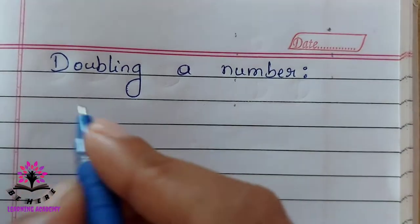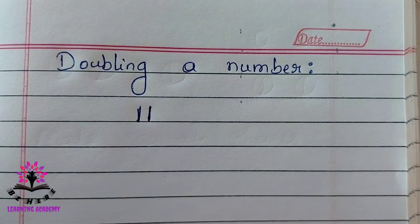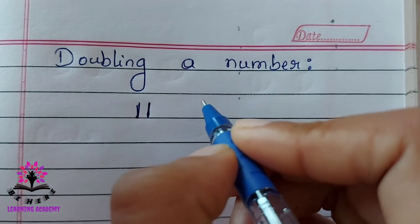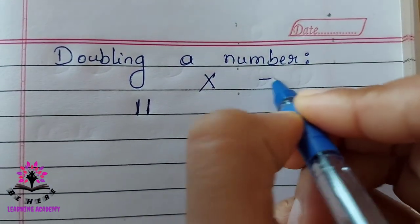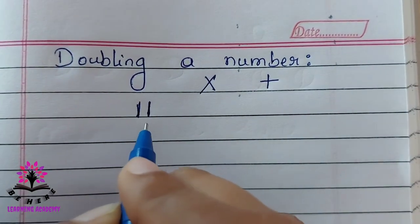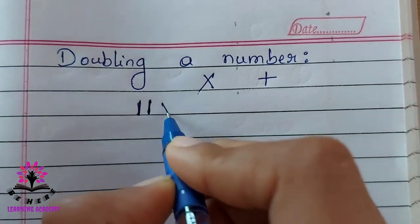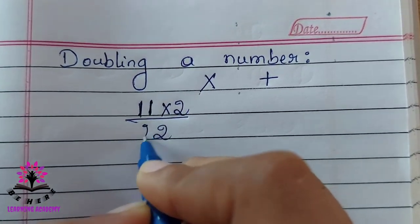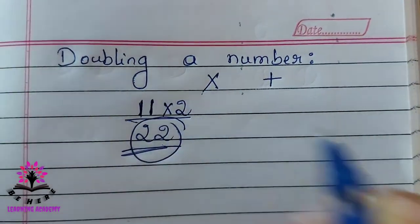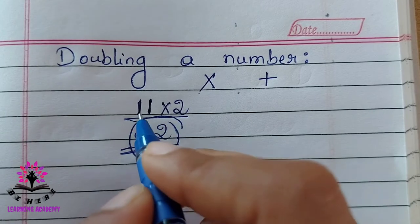Now how to double a given number. For example if 11 is given, if we have to double this number either you can do it by multiplication. In multiplication you have to multiply the given number that is 11 by 2. 2 ones are 2, 2 ones are 2. Now this is the answer, 22 is the answer. Here we have doubled 11.